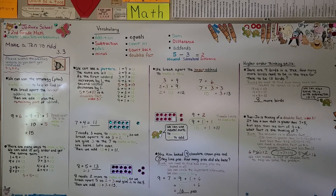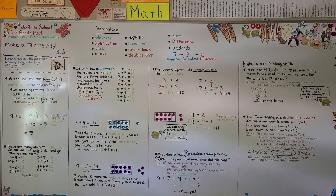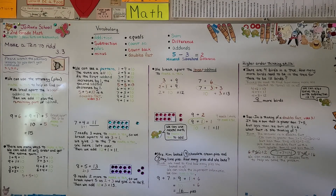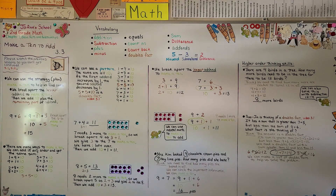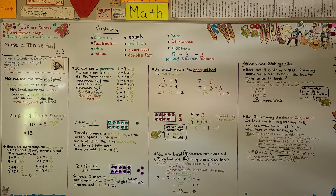So remember to make a 10 to add — we break apart the lesser add-end. Our next lesson, 3.4, we're going to add 3 add-ends. I hope I'll see you there. Keep practicing. I'm proud of you. Bye!